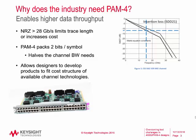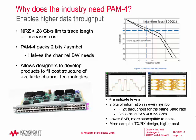That does not come for free, however. For 28 gigabaud PAM-4 — that's a throughput of 56 gigabits per second — we do have lower signal-to-noise ratio, or SNR, and these designs are far more susceptible to noise. In order to deal with these issues, it requires a more complex transmitter-receiver design, which is going to cost more.